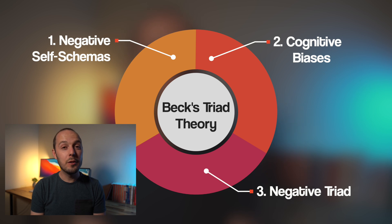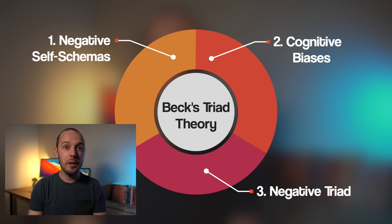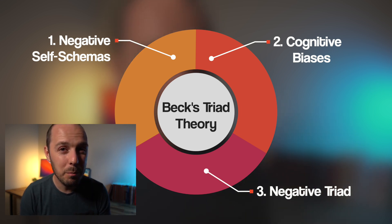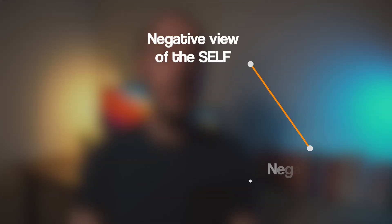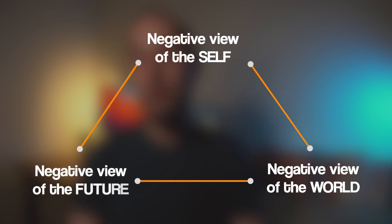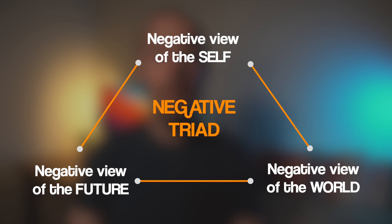Beck's whole theory is called the Triad Theory, but one part of his Triad Theory is called the negative triad. People suffering from depression, according to Beck, have a negative and irrational view of themselves, a negative and irrational view of the world, and a negative and irrational view of the future — what he called the negative triad. Negative self-schemas and cognitive biases maintain this negative triad.